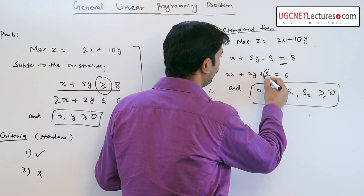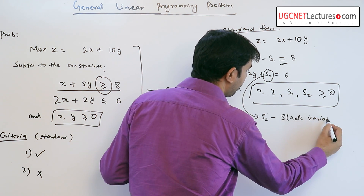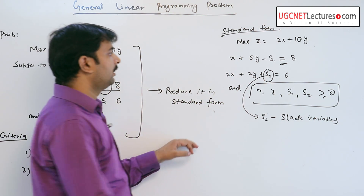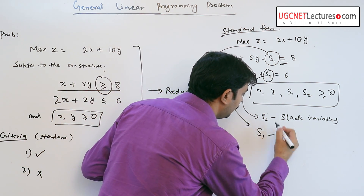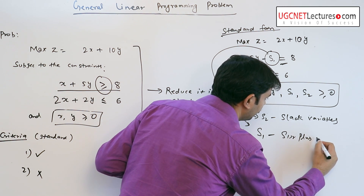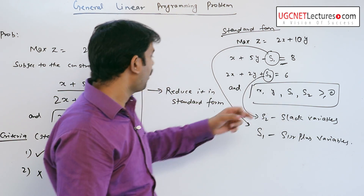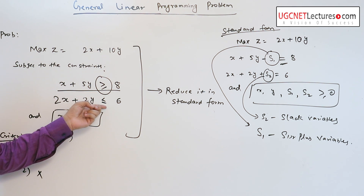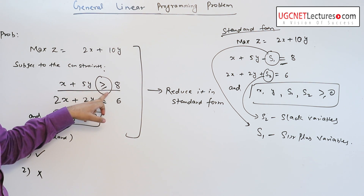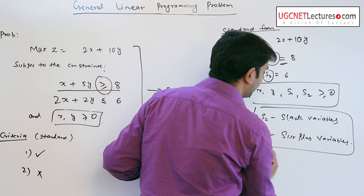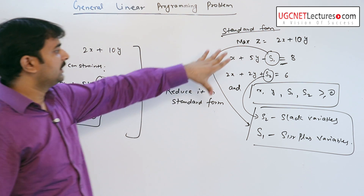Here, S2 is a slack variable, as it has a positive sign. S1 is a surplus variable. Slack variables always appear when the inequality is less than or equal to, and surplus variables appear when the inequality is greater than or equal to. This is the definition of slack and surplus variables, and this is another example of how to reduce a general linear programming problem to its standard form.